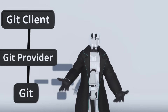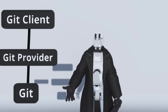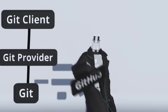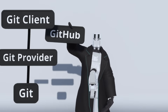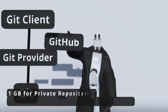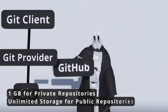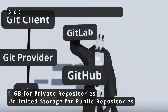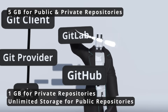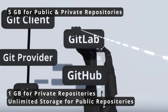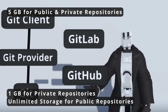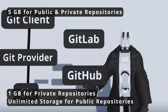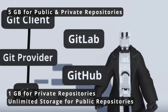Some examples of Git providers you could use include GitHub and GitLab. GitHub is currently providing 1GB for private repositories and unlimited storage for public repositories, while GitLab is providing a blanket 5GB for public and private repositories. Going forward, we will be using GitHub as our Git provider, but the instructions are pretty agnostic, so feel free to use any other provider or even host your own server for a super private setup.